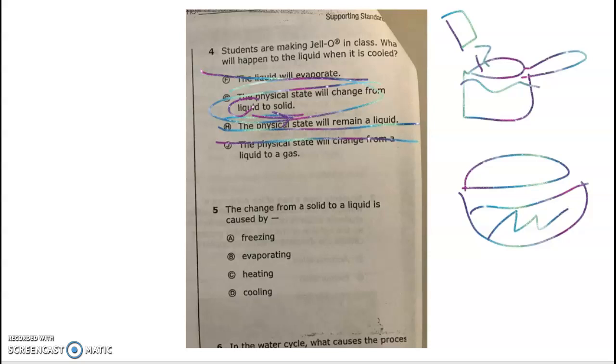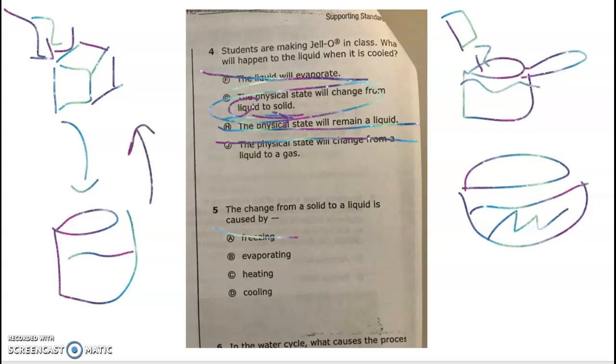Number five says the change from a solid to a liquid is caused by what. If I have something that is a solid, let's say like an ice cube, and then I start to add heat—fire, hot—I know that when I go from a solid to a liquid, usually it's not freezing because that would be going the opposite direction. It's not evaporating because that happens when the liquid turns into a gas.